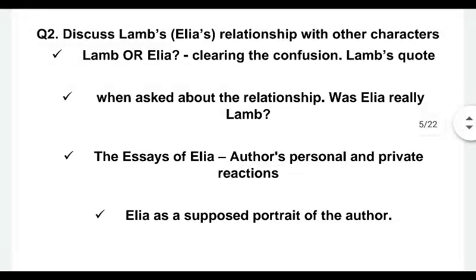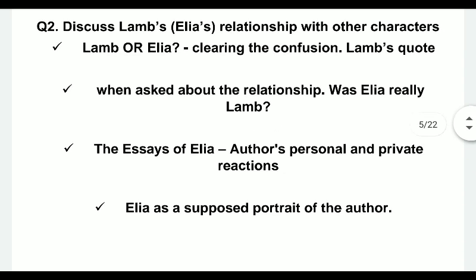We move on to the second question: discuss Lamb's or Elia's relationship with the other characters of the text. The first thing to address is whether it is really Lamb or Elia. I cleared that confusion in class when I gave you the introduction to Lamb's essays. Lamb says these are the figments of my imagination — this is verisimilitude, not verity. That quote really works here and clarifies what Lamb has said about the relationship between himself and the character Elia.